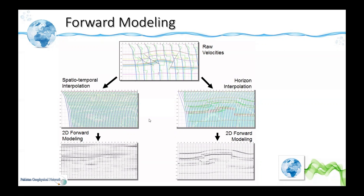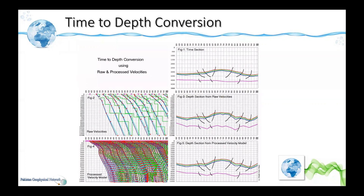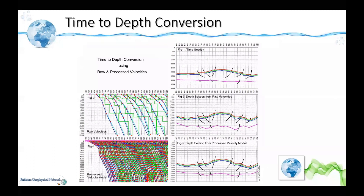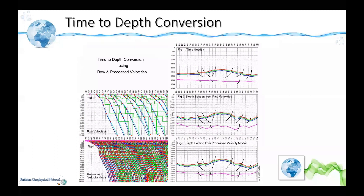The horizon-interpolated velocities generate a 2D forward model showing structural information that more closely matches real geology. If you have a true velocity model and convolve it with a wavelet, it gives a more realistic subsurface image compared to one that doesn't capture the subsurface. For time-to-depth conversion: applying raw velocity functions gives a depth section that doesn't appear geologically true, whereas applying a properly built velocity model produces a smooth, geologically realistic depth-converted section. A more accurate velocity model leads to a more geologically realistic depth image.